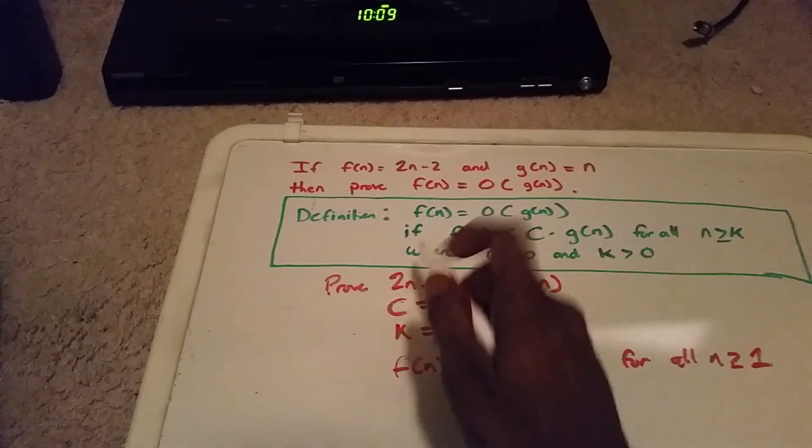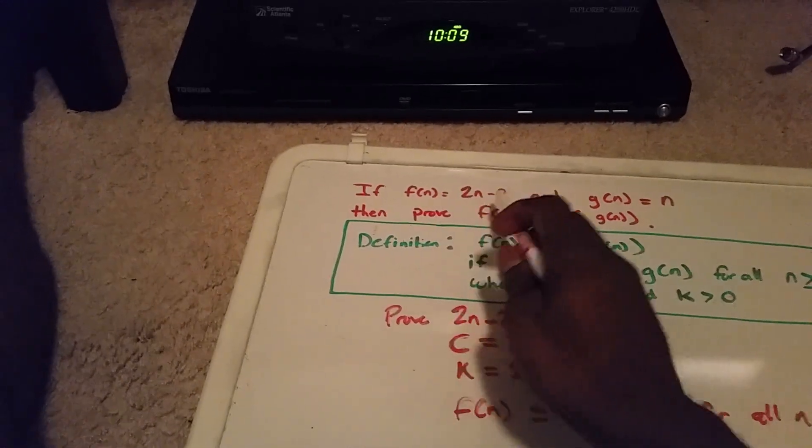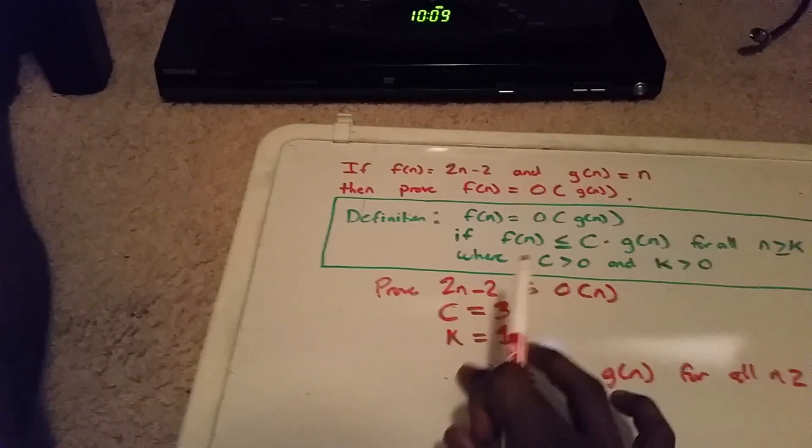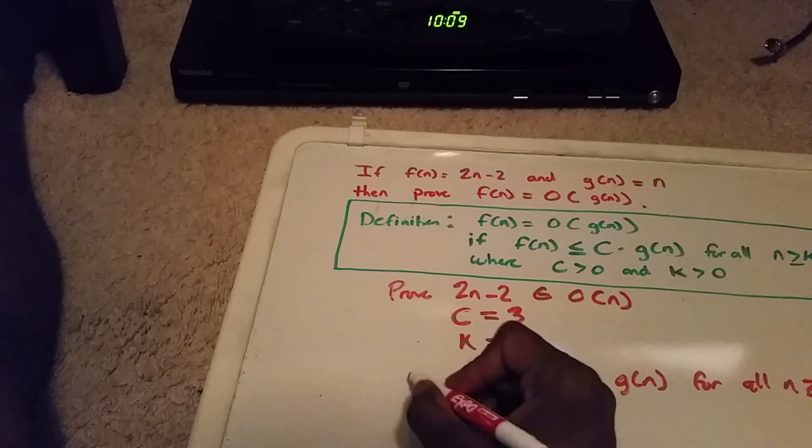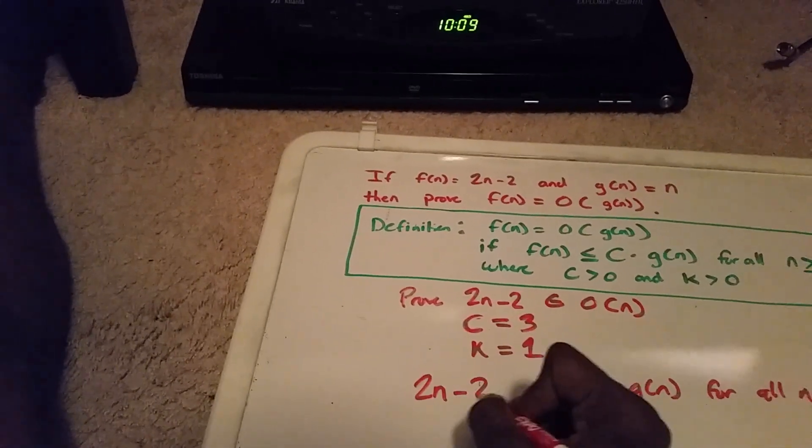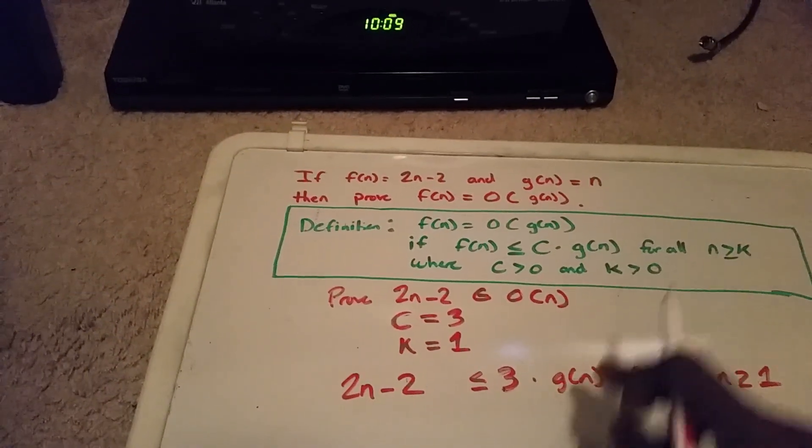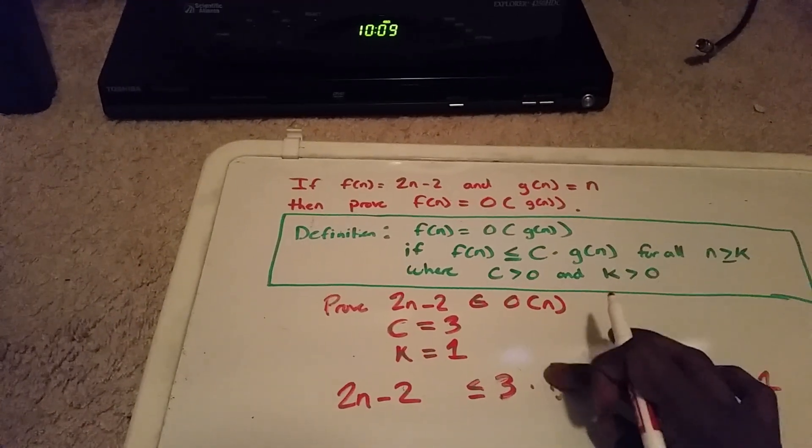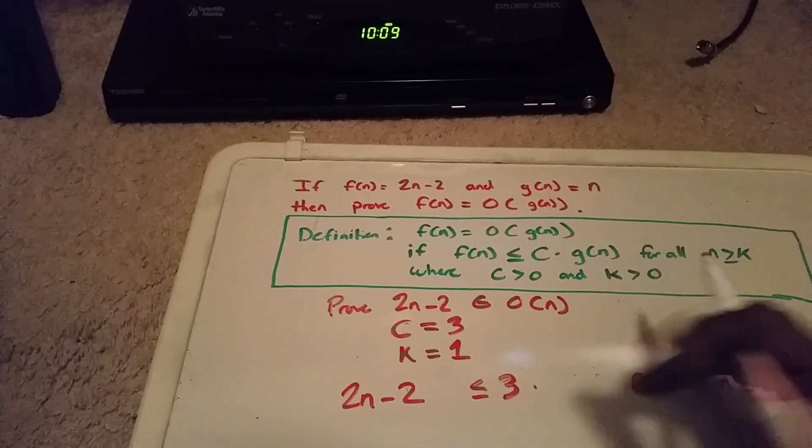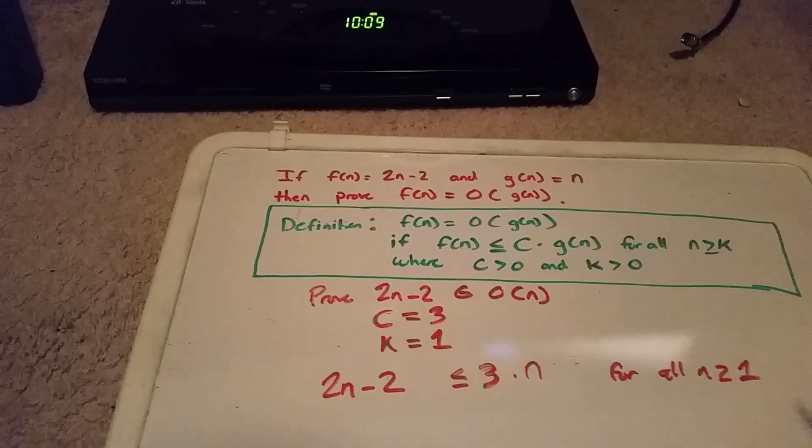Our f(n) is 2n minus 2, and our g(n) is n. So we can multiply by n.